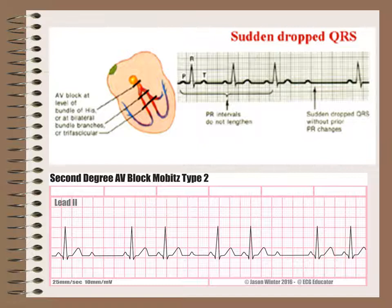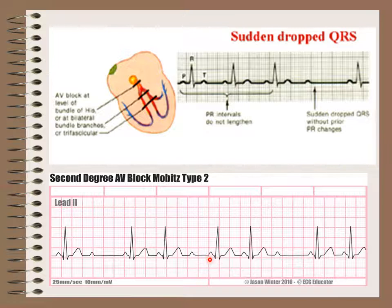In this rhythm strip, in the first cycle the PR interval is normal; in the following cycle the PR interval is still normal; in the third cycle the P wave is not conducted to the ventricle. This is then followed by a cycle with normal PR interval, another normal cycle, and in the third cycle there is a drop in conduction without prolongation of the PR interval — and so on. The conduction is interrupted suddenly from atrium to ventricle without gradual prolongation, which characterizes disease in the bundle of His.